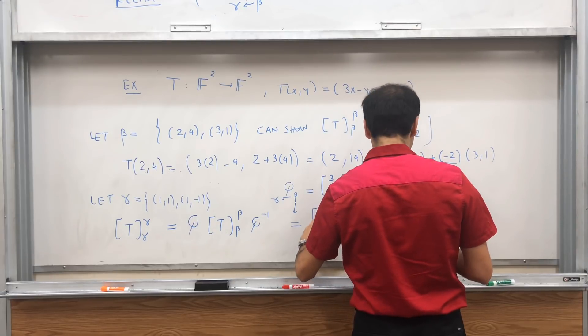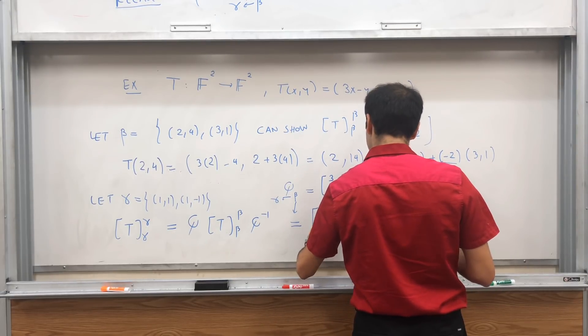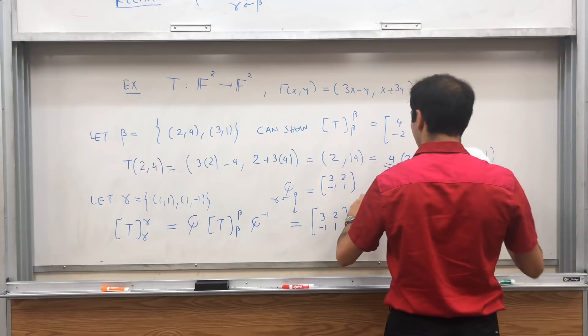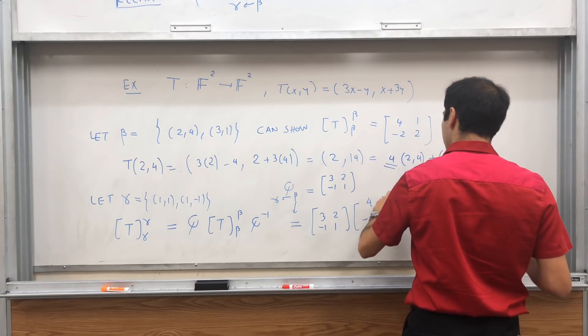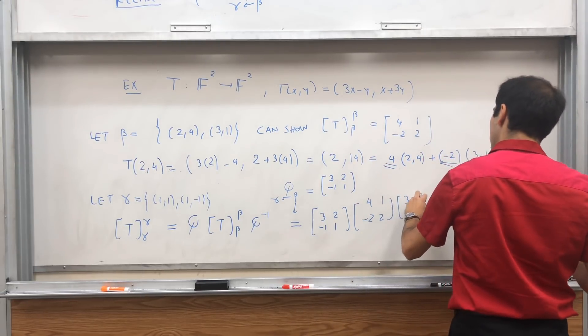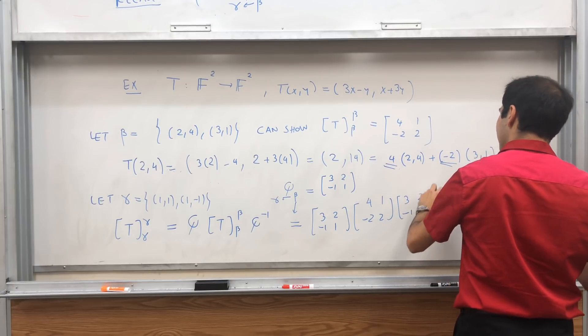So what this then becomes, it's (3, 2, -1, 1) times the old matrix (4, 1, -2, 2) times (3, 2, -1, 1) inverse.